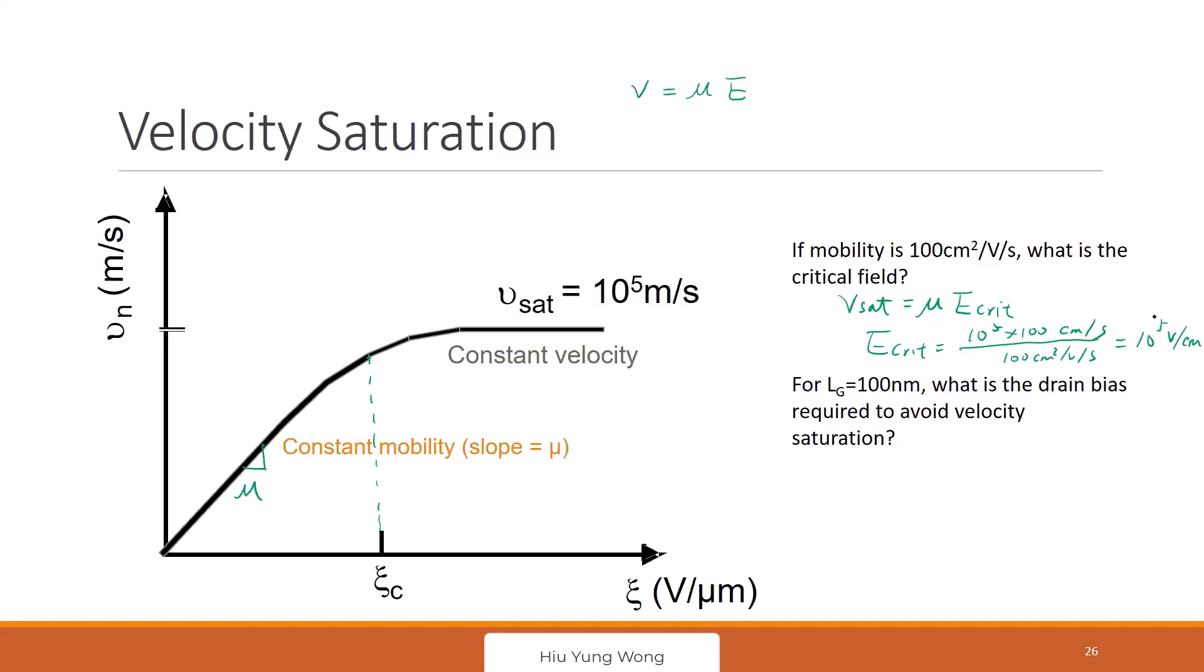So once you reach this electric field, your electron will be traveling at a constant velocity. Even you add high electric field, they refuse to travel faster. That is the limit.